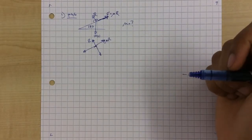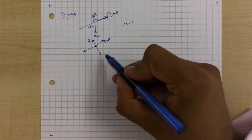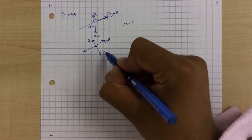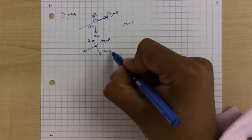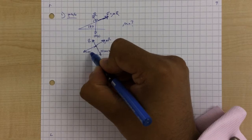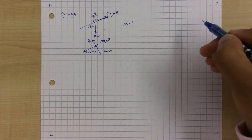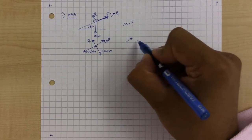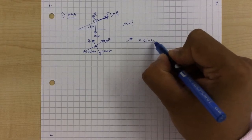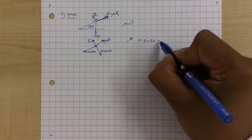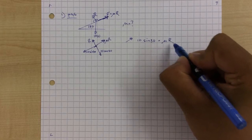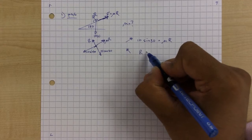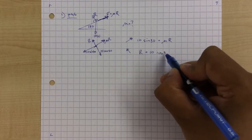We now put in our values. The weight is 10 newtons and we turn through 30 degrees, so the component perpendicular to the plane is 10 cos 30, and the component along the plane is 10 sin 30. Going up the plane: 10 sin 30 equals mu R. Looking perpendicular to the plane: R equals 10 cos 30.